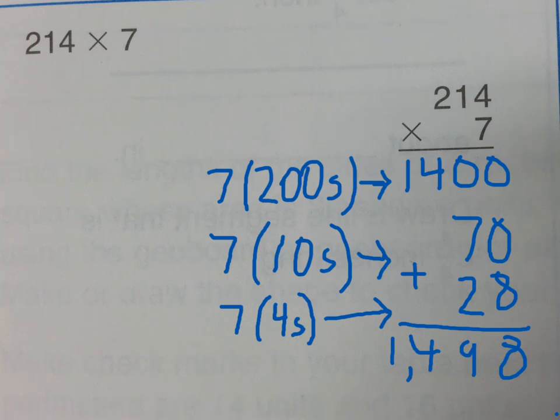So this is a start for the partial products algorithm. All of these examples were two or three digits times one digit. You could do four or five digits times one digit. When you add a second digit to the multiplier, it changes things, and we can cover that later. This should give you an introduction to the partial products algorithm. Thank you.